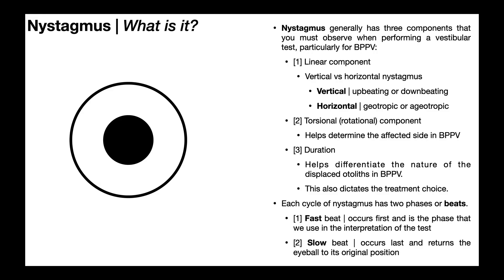Suppose you perform one of the special tests for BPPV, like the Dix-Hallpike maneuver or the horizontal roll test, and the patient presents with nystagmus. You have to interpret it.